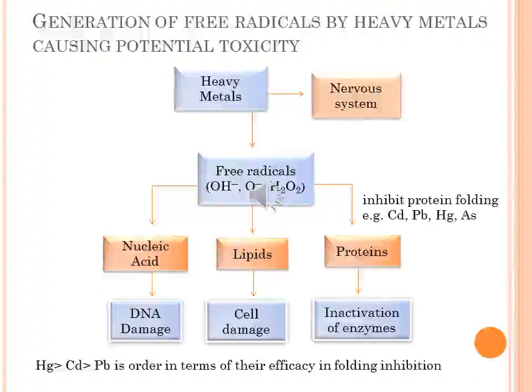Manganese vapor diffuses across the lung membrane to the central nervous system, causing damage to the CNS. Inorganic salts of manganese which are lipid-soluble diffuse across the body to the CNS, while water-soluble inorganic manganese salts are distributed in plasma for renal elimination. Arsenic is distributed in blood and accumulates in the heart, lung, liver, kidney, muscle and neural tissue, and also in the skin, nails and hair, causing toxicity.